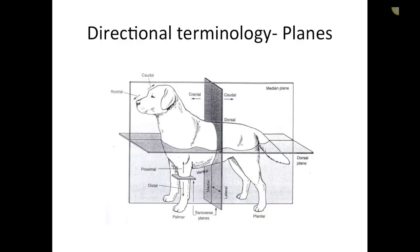Looking at directional terminology, the reason we use this is to describe what we're seeing and where we're seeing it on an animal. As an RVT, our role typically is when an animal comes into a clinic, we do a physical exam and start identifying normals and abnormals. When writing up medical records and describing this to the doctor, we have to be able to tell them exactly where we're seeing something abnormal. We'll use terminology such as lateral, medial, cranial, caudal, rostral, etc.